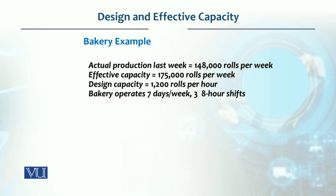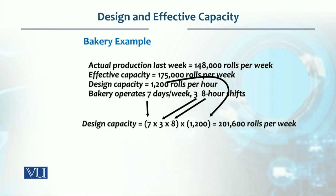Now let's take a small example of a bakery. Actual production last week was 148,000 rolls. Effective capacity that management expected to achieve was 175,000 rolls per week. Design capacity is 1,200 rolls per hour. Since this is given in hours, we need to convert it into weeks. The bakery operates seven days a week with three eight-hour shifts per day. So design capacity equals 7 × 3 × 8 × 1,200 = 201,600 rolls per week. This is our design capacity.